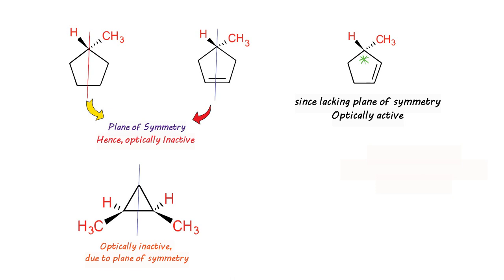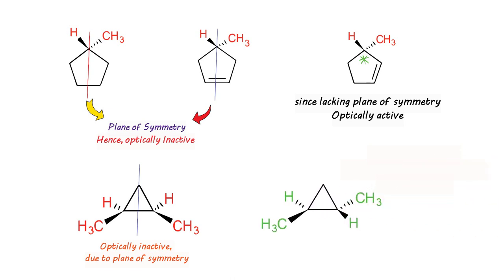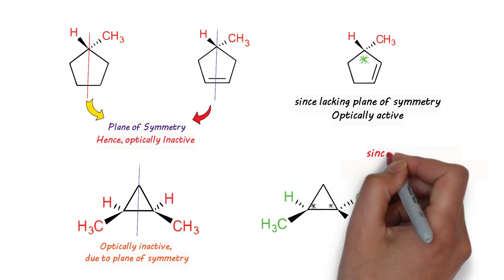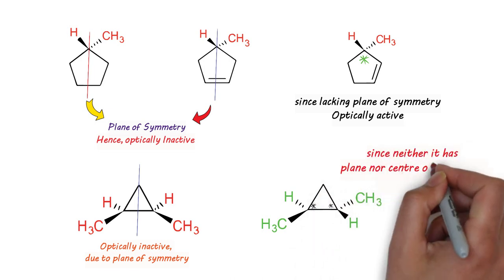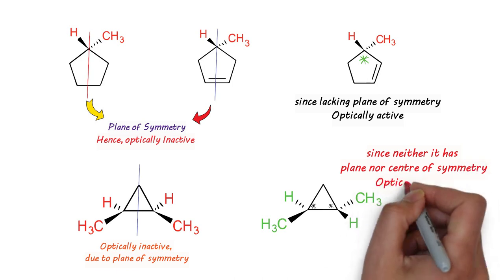However, in the next case the two methyl groups are opposite to each other — one towards you and one away from you — and one hydrogen is towards you and another away from you. Because of this configuration there is no plane of symmetry and no center of symmetry; there are two chiral centers, hence it is optically active.